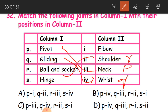Hinge joint - it is in the elbow. So the matching goes: P is the third one, Q is the fourth, R is the second, and S matches with the first. The correct answer is option C. Pivot bone is with the neck, gliding is with the wrist, ball and socket is with the shoulder, and hinge is with the elbow.